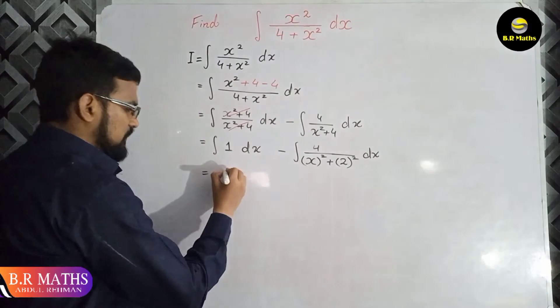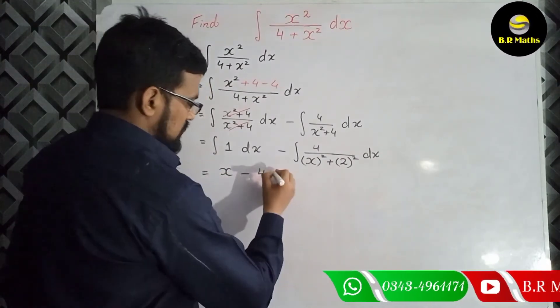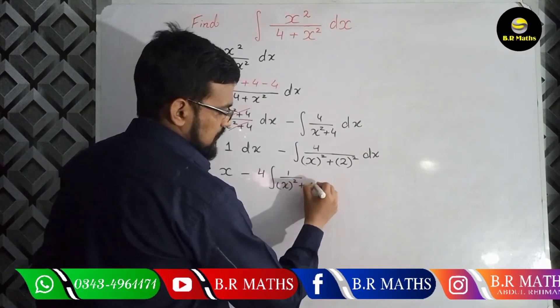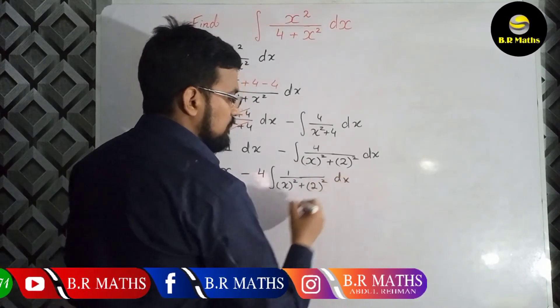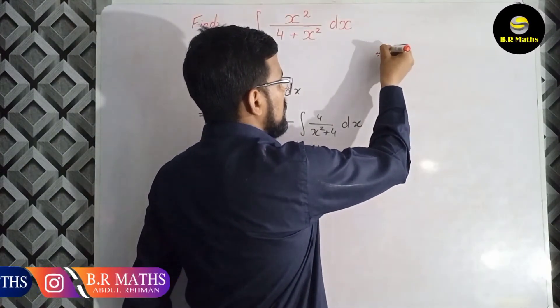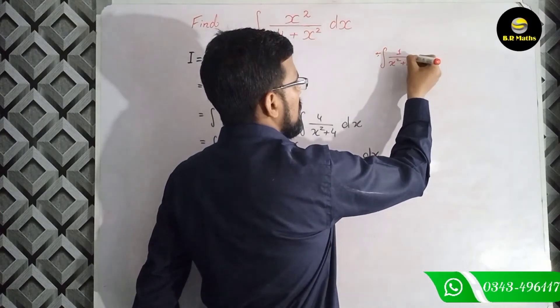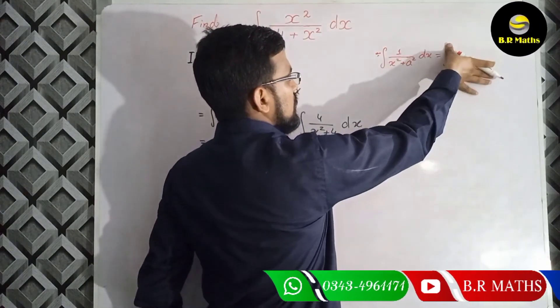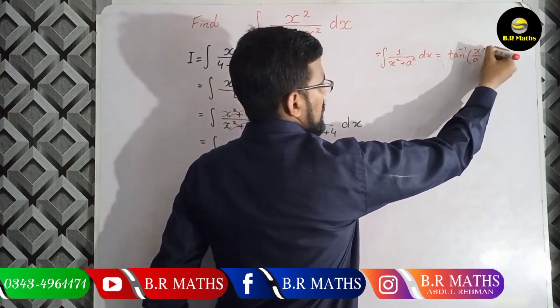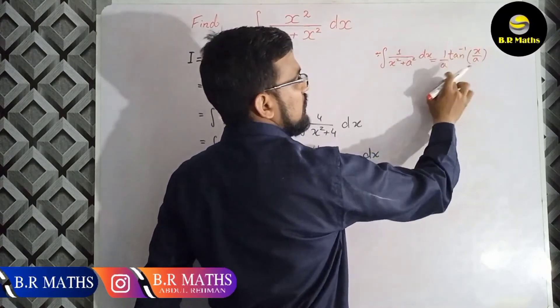So in this one, integration of 1 becomes x minus 4 and this is 1 over x square plus 2 square dx. You know that the formula is: integration of 1 over x square plus a square dx is equal to tan inverse of x over a, and 1 over a. This is the general formula of integration.